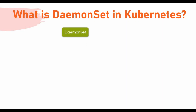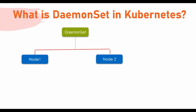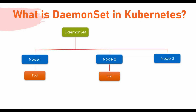In DaemonSet, for every node in your Kubernetes cluster, it will make sure that every node has one pod running. For example, node 1 has one pod, node 2 has another pod, and if you add a new node to your Kubernetes cluster, DaemonSet will automatically add another pod on that new node as well.